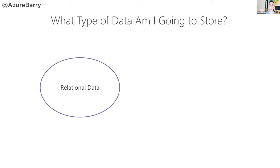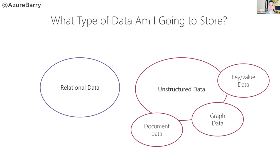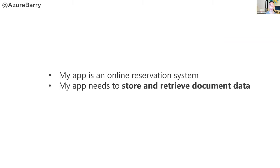The second question is: what type of data am I going to store? Is it relational data — tables with rows and columns — or unstructured data, which includes document data, key-value data, graph data, images, videos, and more? For example: my application is an online reservation system, which is forms over data, so I'll use OLTP services, and my app needs to store and retrieve document data, which is non-relational.